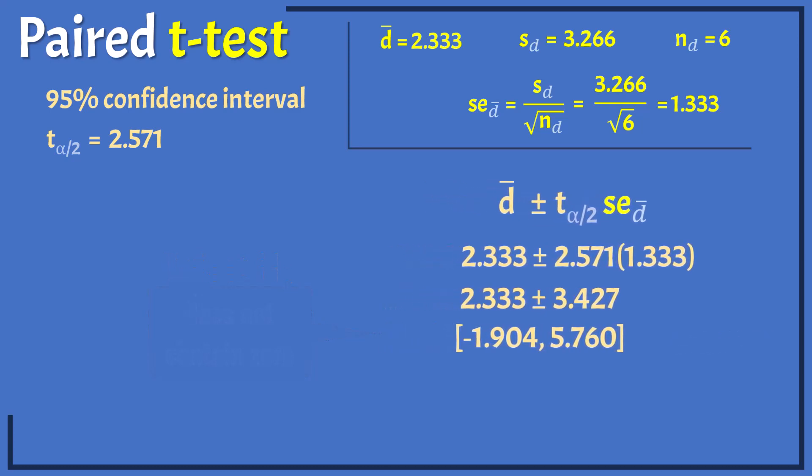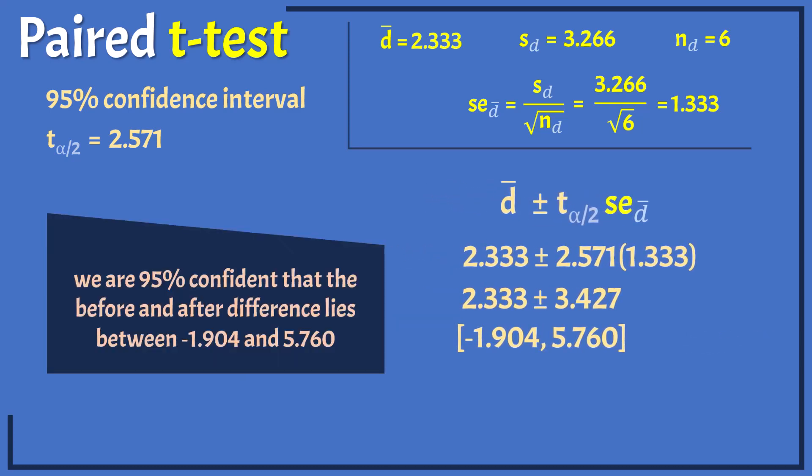To interpret, we say we are 95% confident that the difference between the before and after scores lies between the lower and upper limits. And that's it for this video. Thanks for watching.